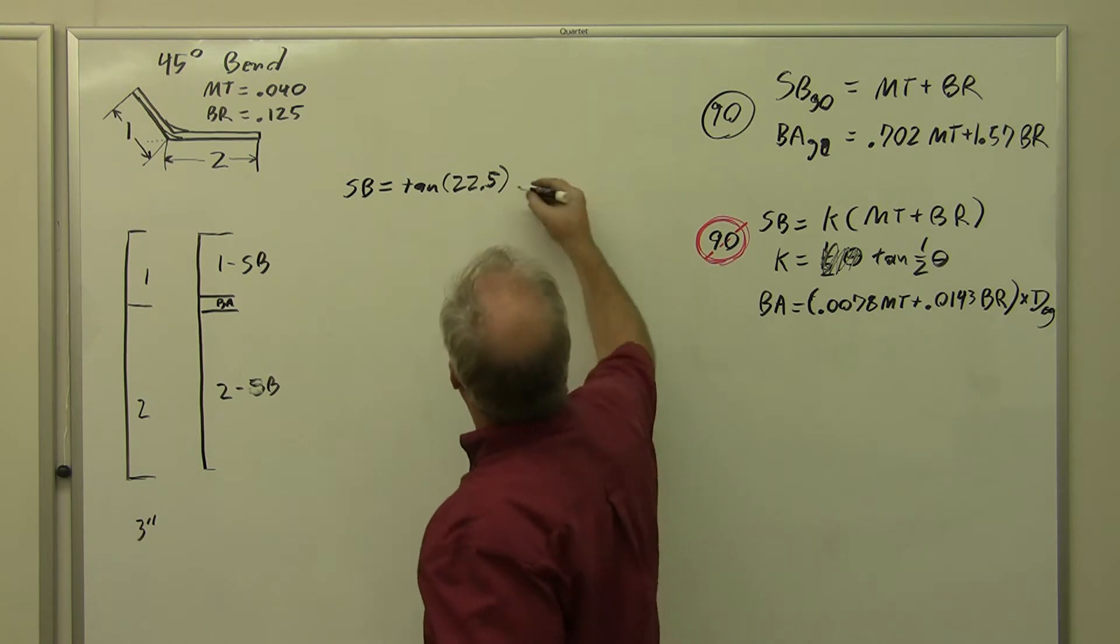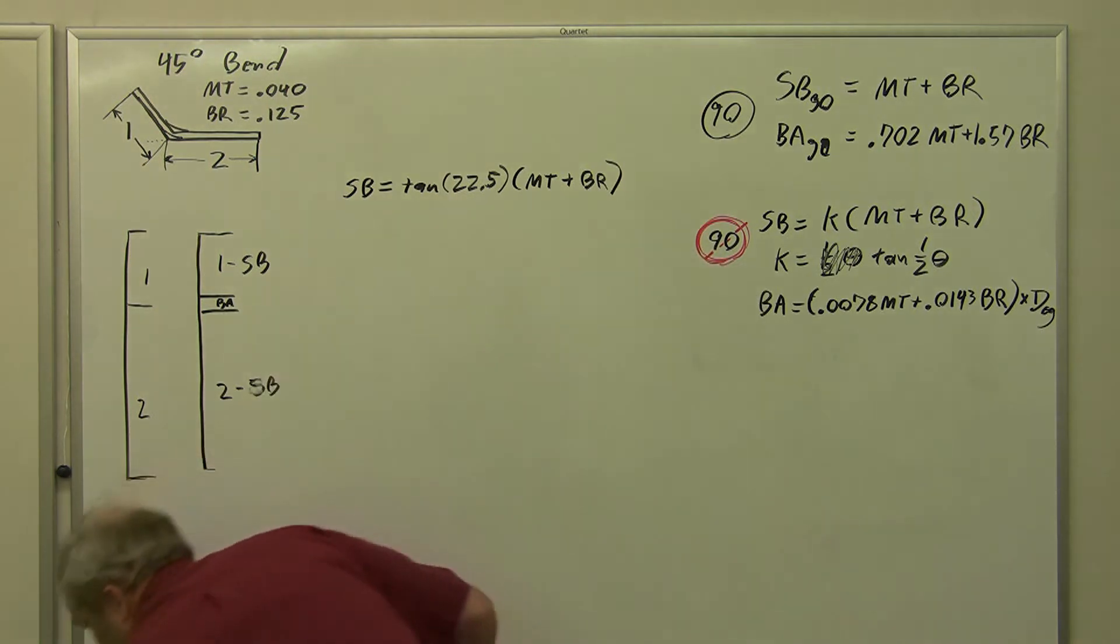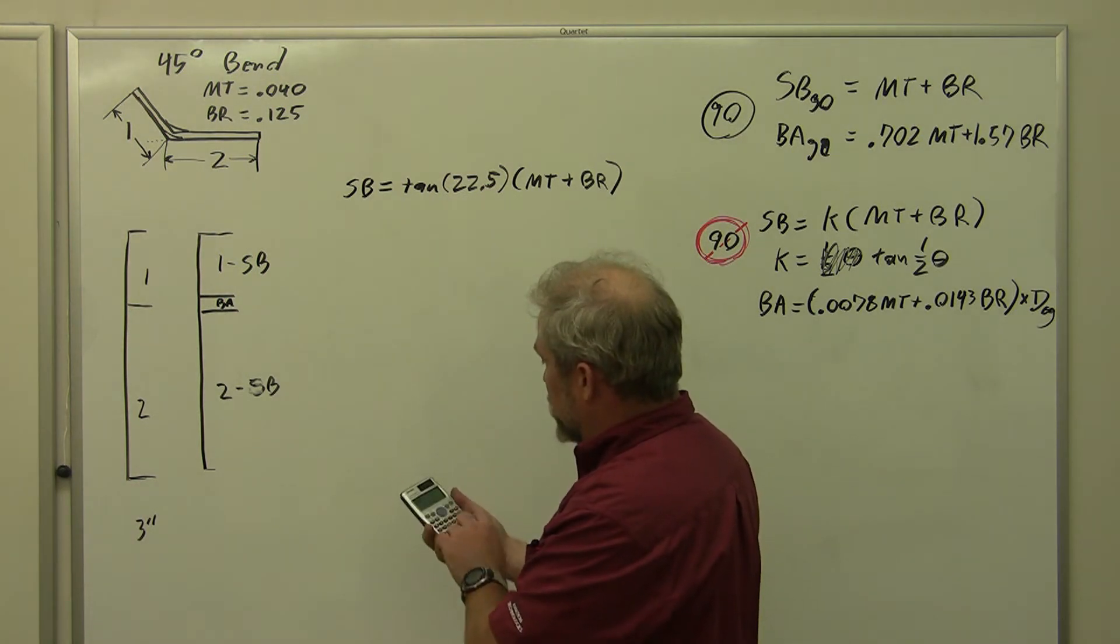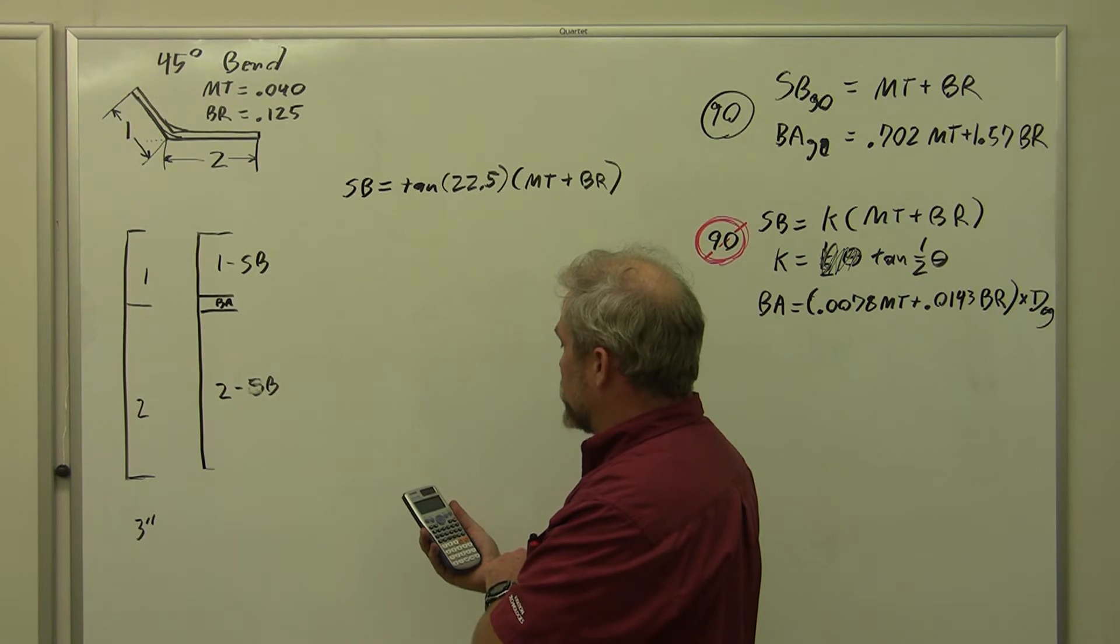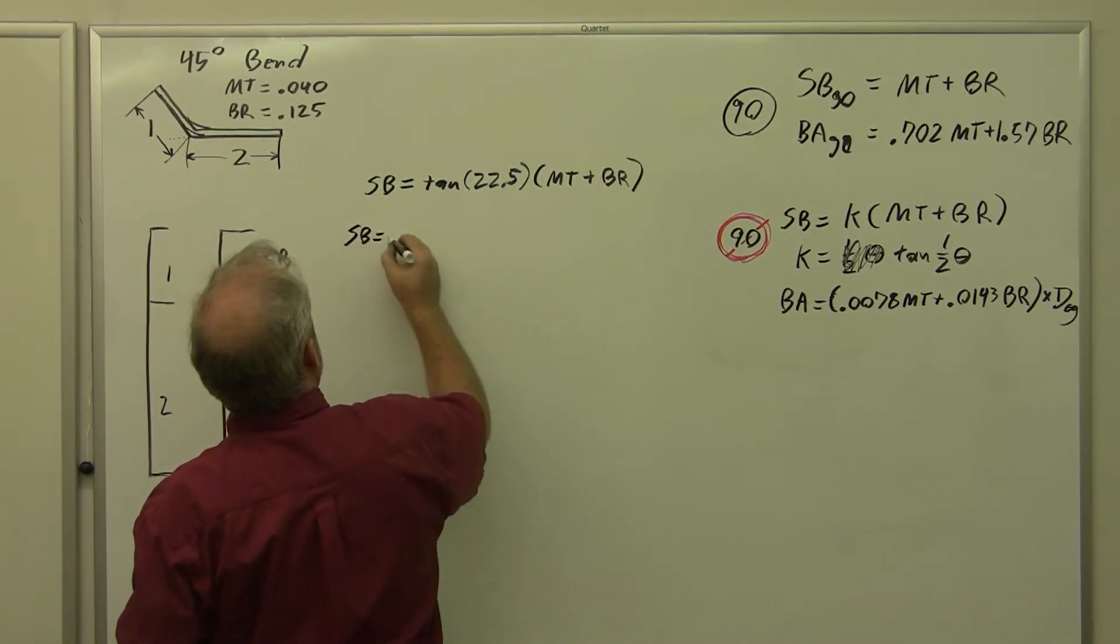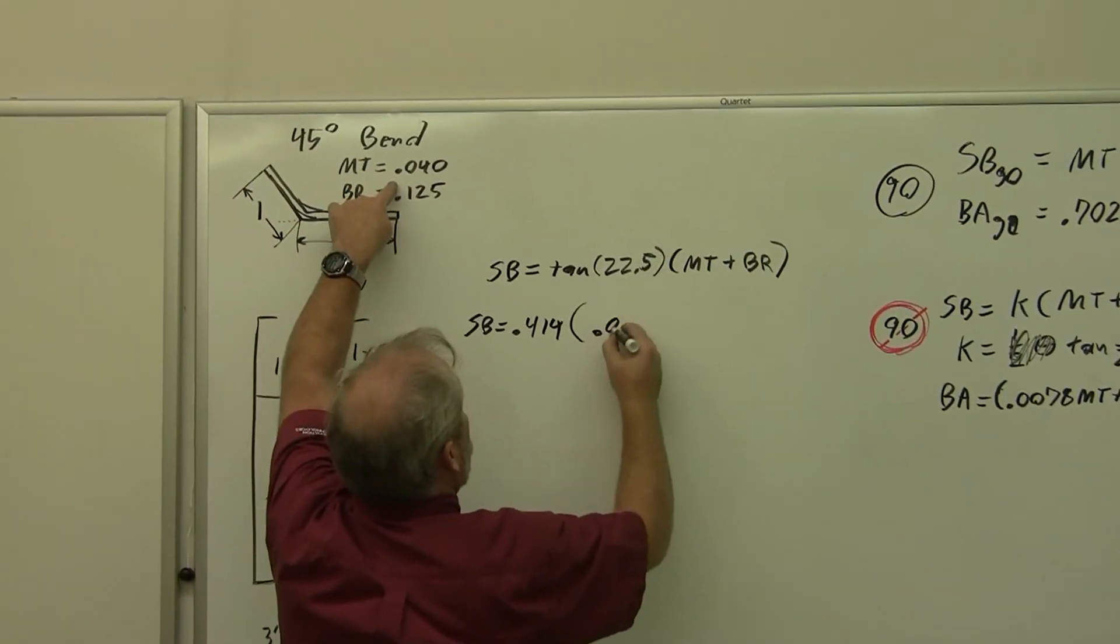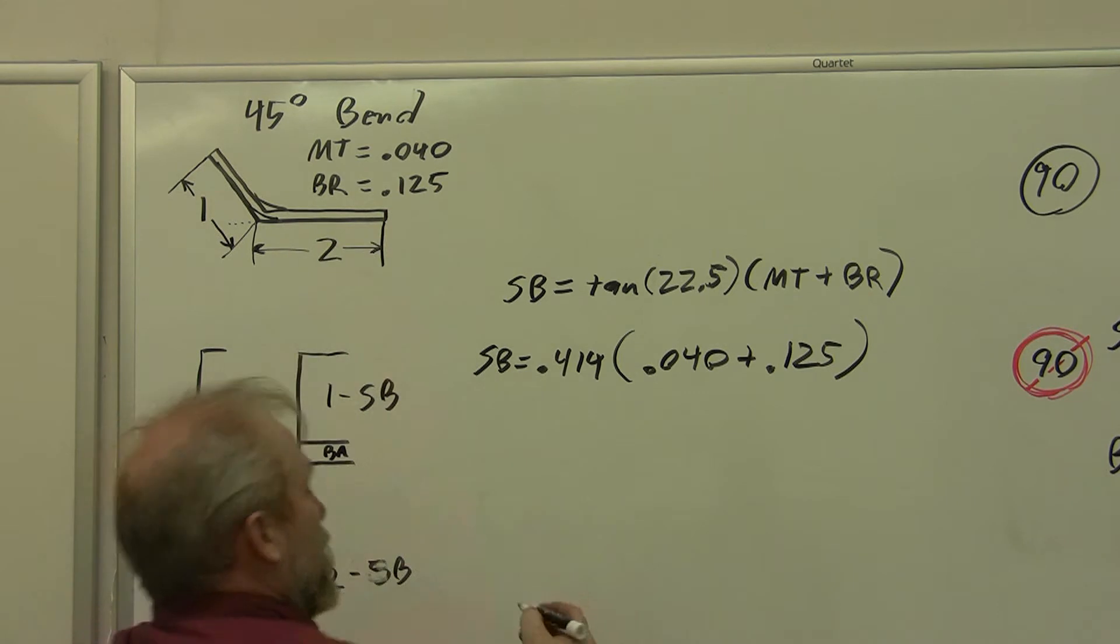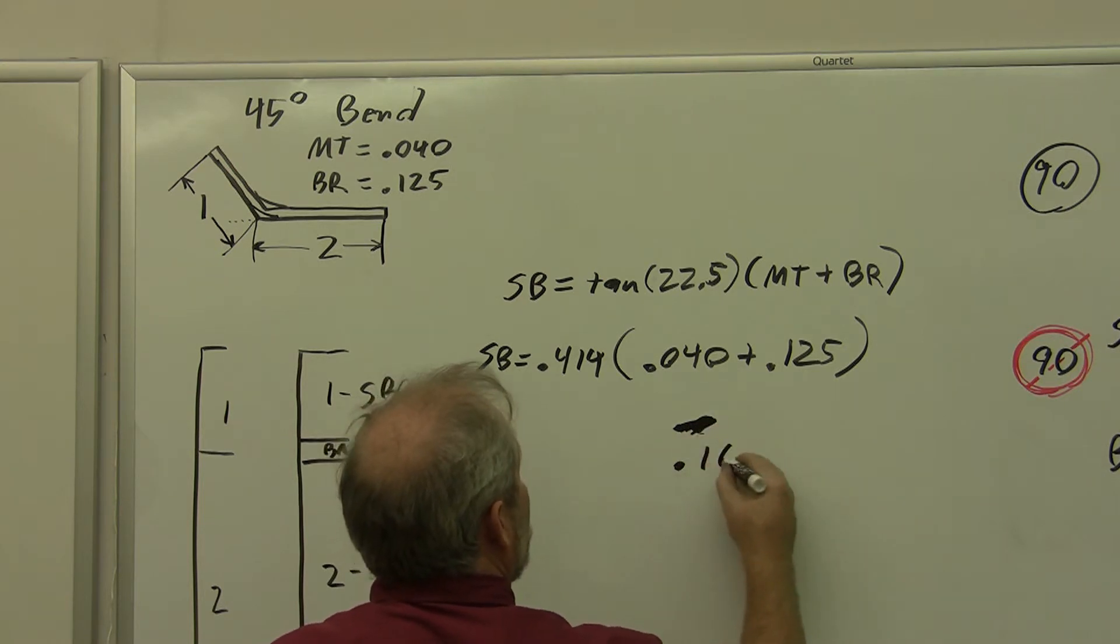I'll show you the other thing in just a minute. Material thickness plus bend radius. So the first thing I want to do is solve out for what is that tangent of 22.5. So I hit the tangent button, 22.5, enter. And it gives me 0.414. So my setback equals 0.414 times my material thickness of 0.040 plus my bend radius of 0.125. Let's go ahead and simplify that out. That is 0.165.